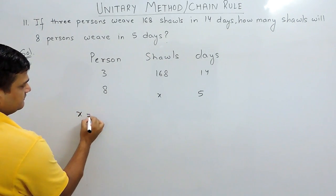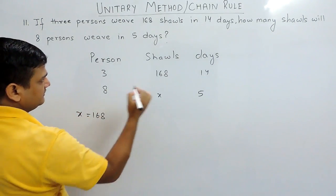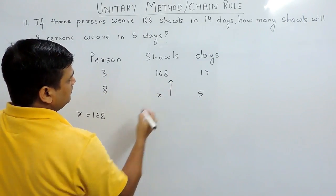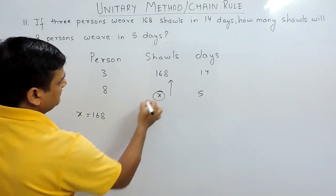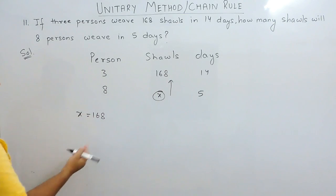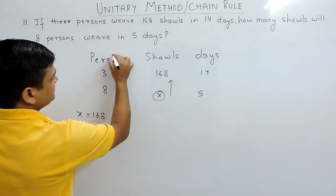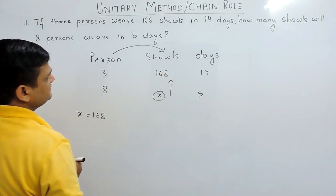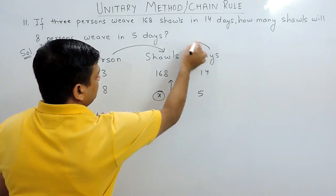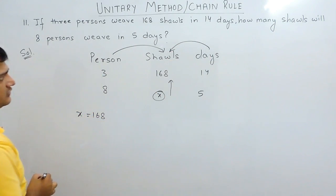Here x equals 168. The value above the variable must be placed on the right hand side of the equal sign. Now we find the relation of person with the shawls and days with the shawls.